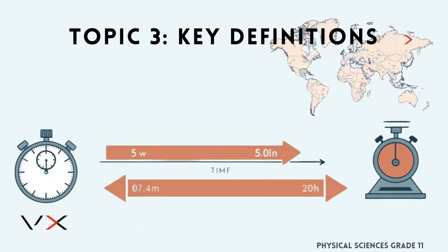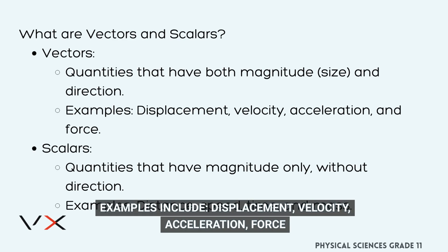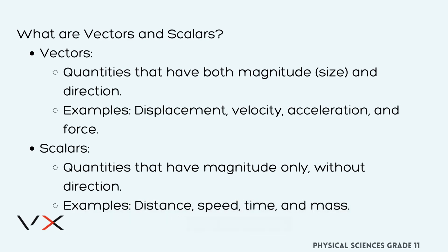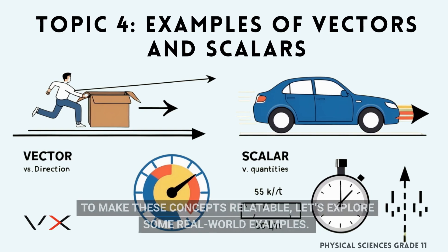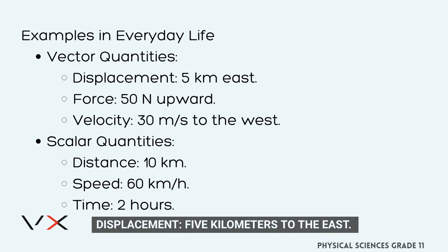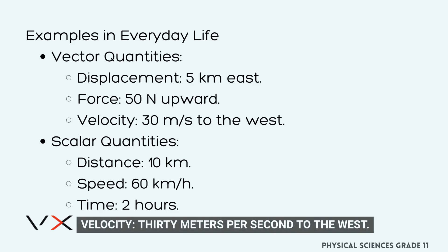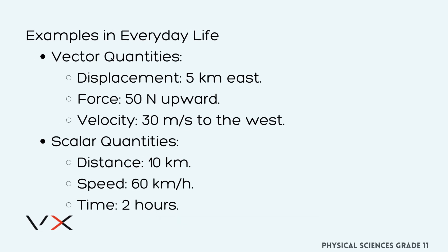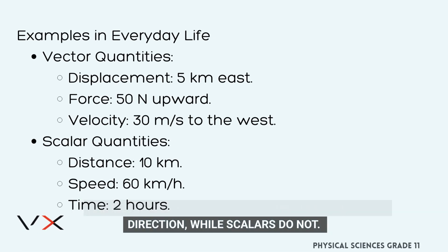Vectors are quantities that possess both magnitude and direction. Examples include displacement, velocity, acceleration, and force. Scalars, on the other hand, are quantities with only magnitude. Examples include distance, speed, time, and mass. To make these concepts relatable, let's explore some real-world examples. Vectors: displacement — 5 km to the east; force — 50 N upward; velocity — 30 m/s to the west. Scalars: distance — 10 km; speed — 60 km/h; time — 2 hours. Notice the difference: vectors include a specified direction while scalars do not.